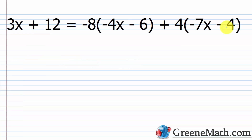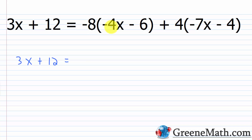For the first example, we have three x plus 12 is equal to negative eight times the quantity negative four x minus six, plus four multiplied by the quantity negative seven x minus four. The first thing I want to do is simplify each side separately. On the left, three x plus 12 — I can't do anything with that. On the right, I can clear my parentheses: negative eight times negative four x is 32x, negative eight times negative six is plus 48, then four times negative seven x is minus 28x, and four times negative four is minus 16.